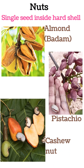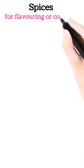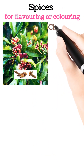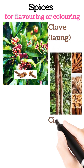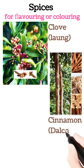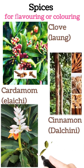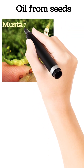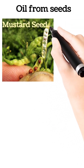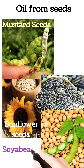Cashew is the only nut that is found outside the fruit. Spices are used for flavouring or colouring the food. Clove or long, cinnamon (dal chini) is a bark of a stem, cardamom (elaichi), and many other spices. Oils that we get from seeds are used for our food, such as mustard seed oil, sunflower seed oil, and soya beans oil.